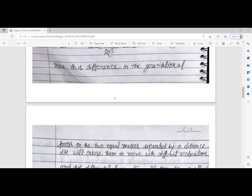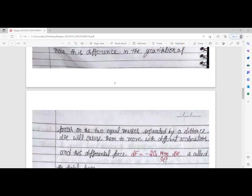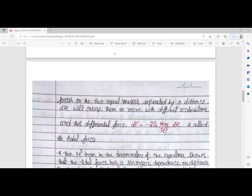Differentiating equation F, we get dF = -2GMm/r³ dr, which we obtained by differentiating equation one with respect to r. This differential force causes them to move with different accelerations.